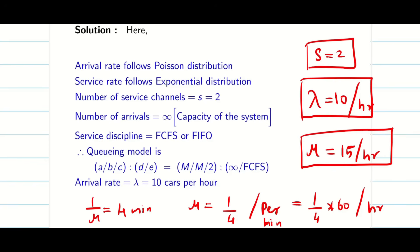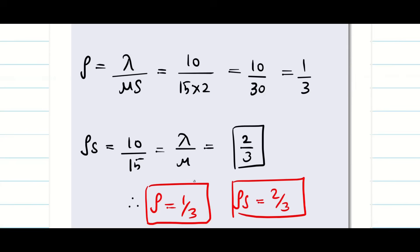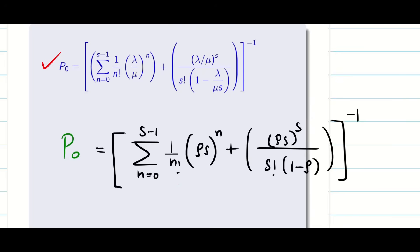Before solving the individual questions, we need to calculate ρ, ρs, and P₀. For the multi-server model, ρ = λ/(μs) = 10/(15×2) = 1/3. And ρs = λ/μ = 10/15 = 2/3. We also need capital P₀ for solving all other parts.